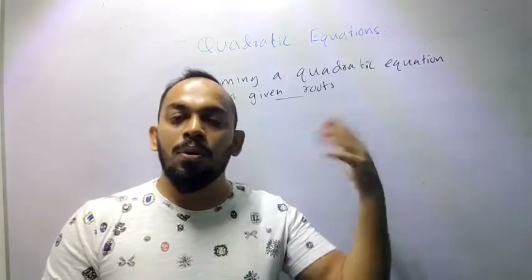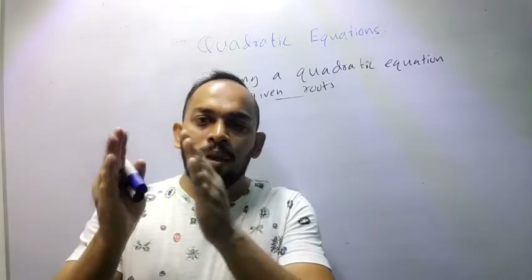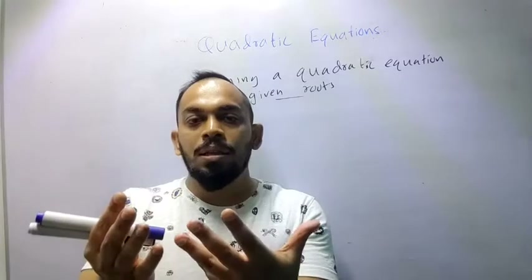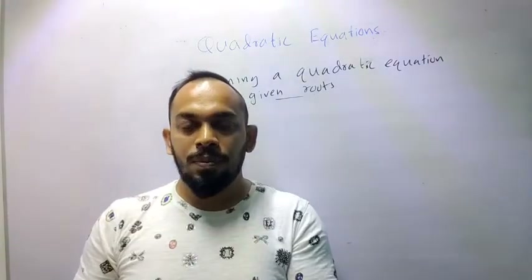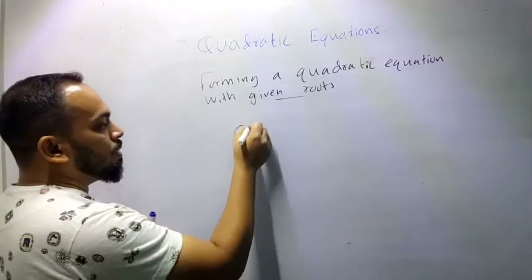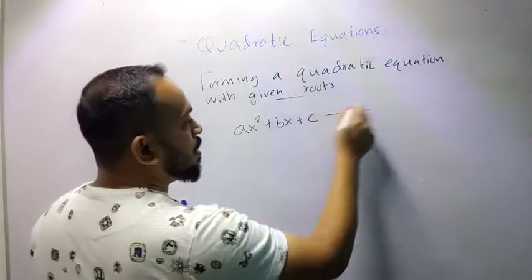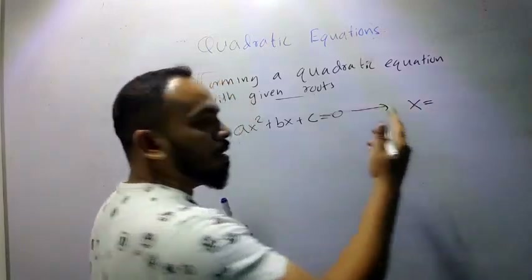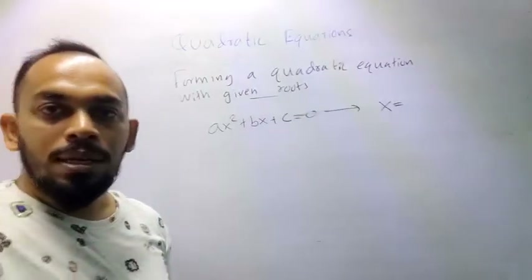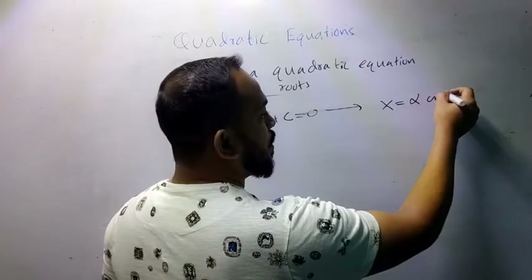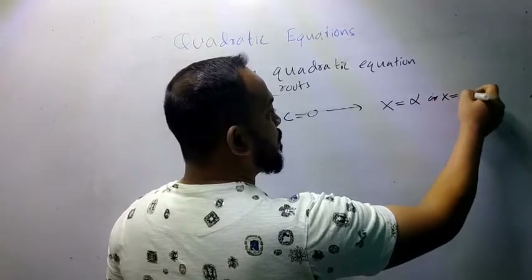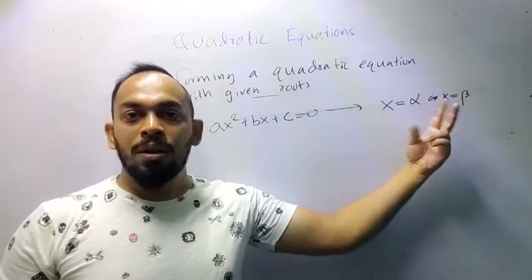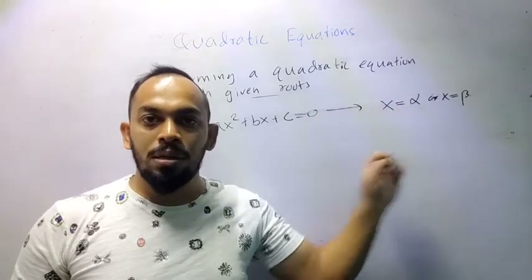We used a quadratic equation — going from the quadratic equation to solutions, or describing the nature of solutions. That was ax² + bx + c = 0, and we found solutions x = α or x = β, then examined whether α and β are two distinct values, coincident, or non-real.